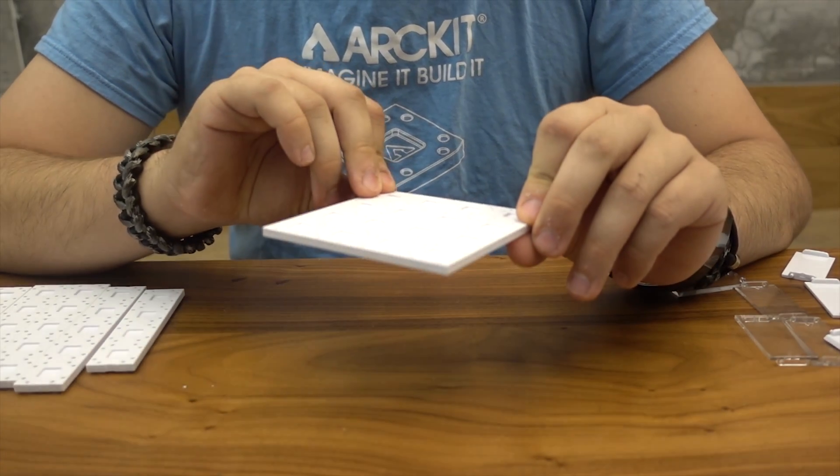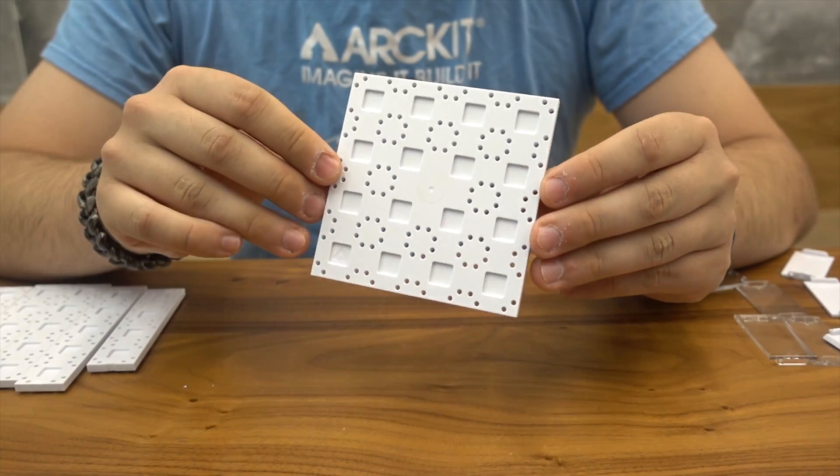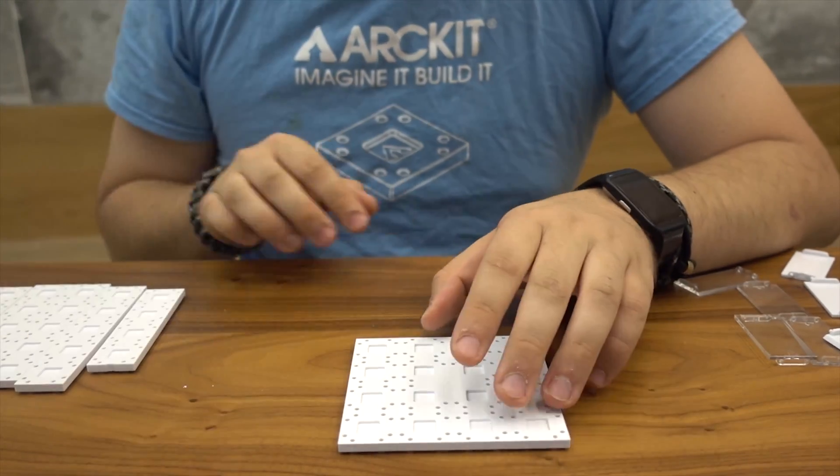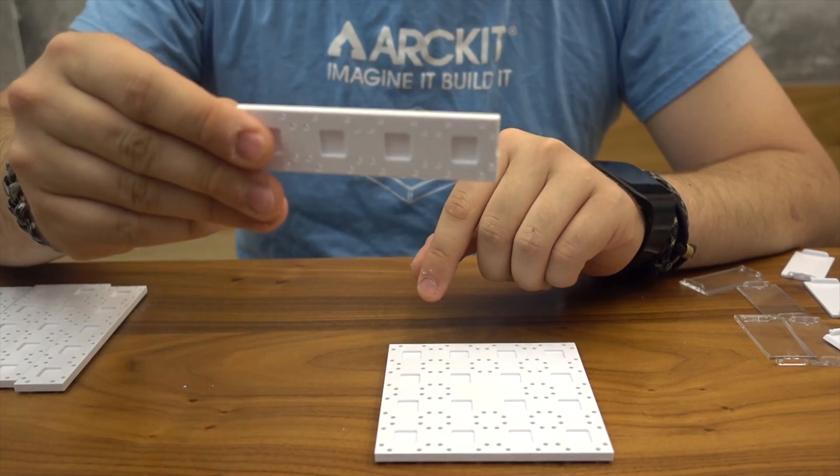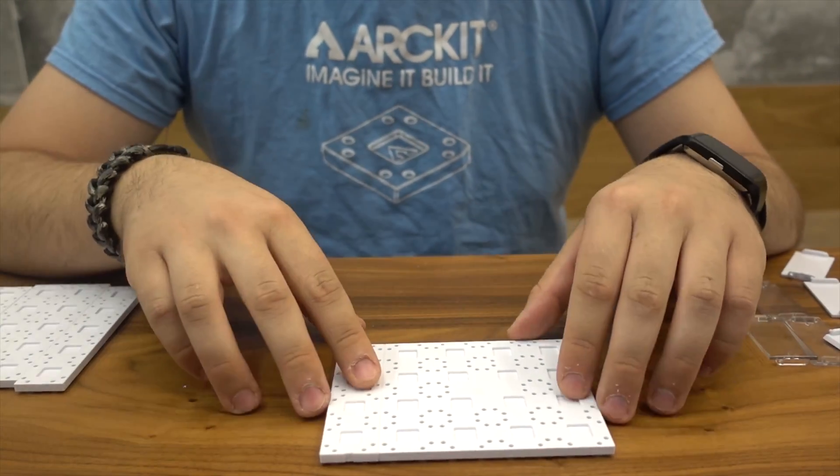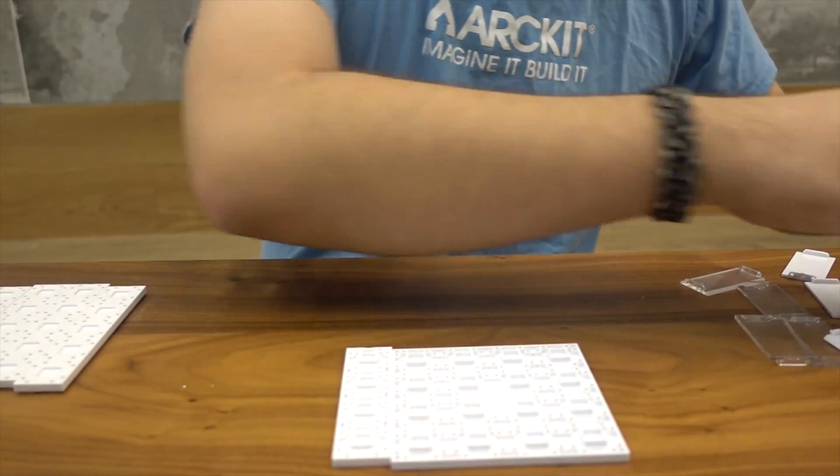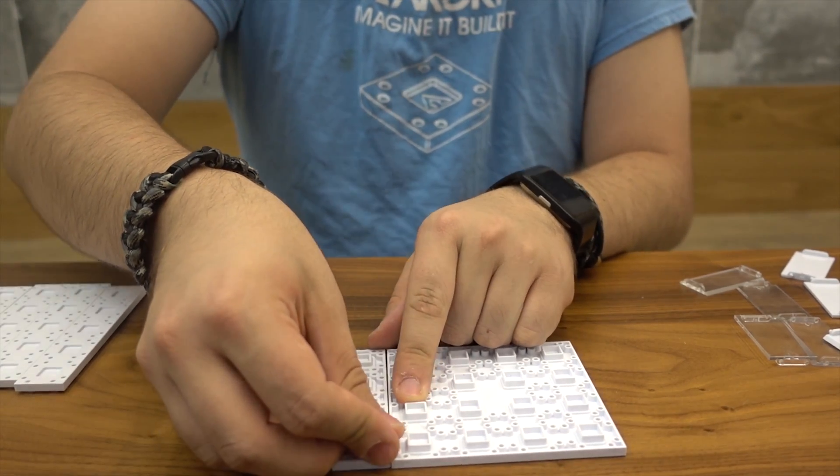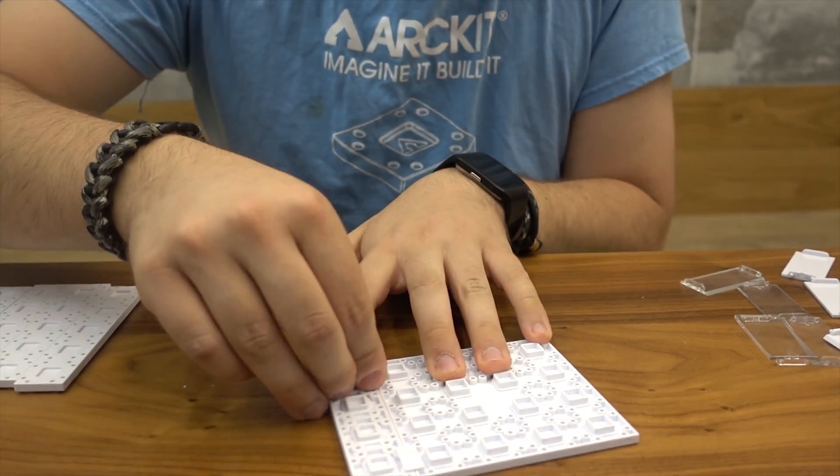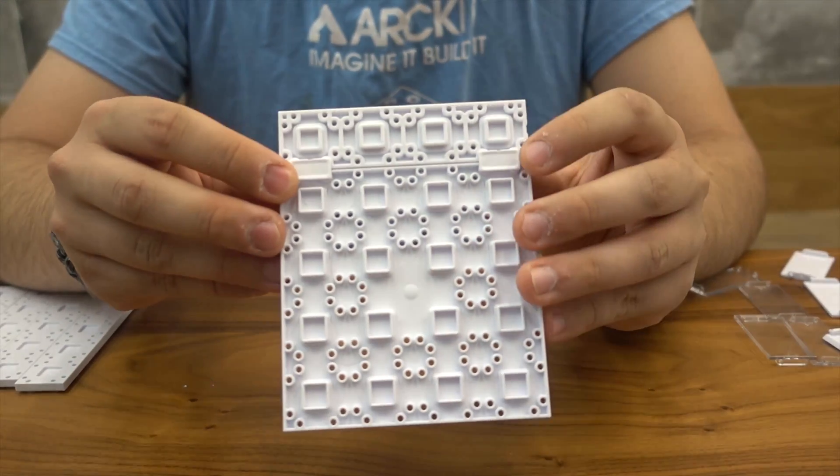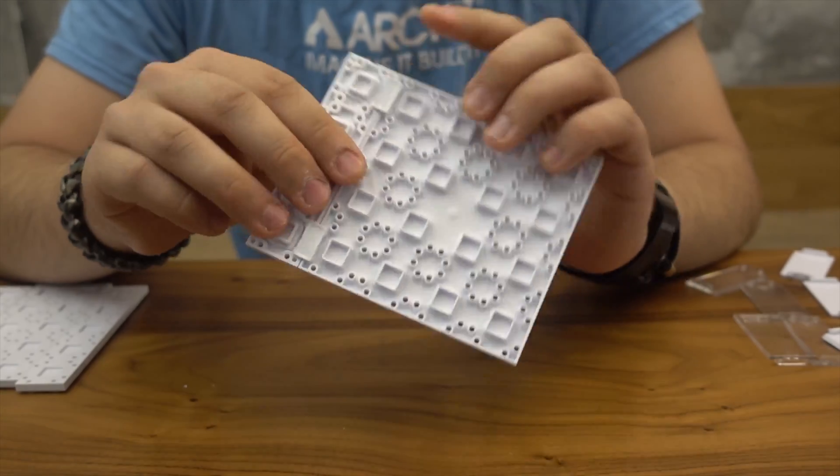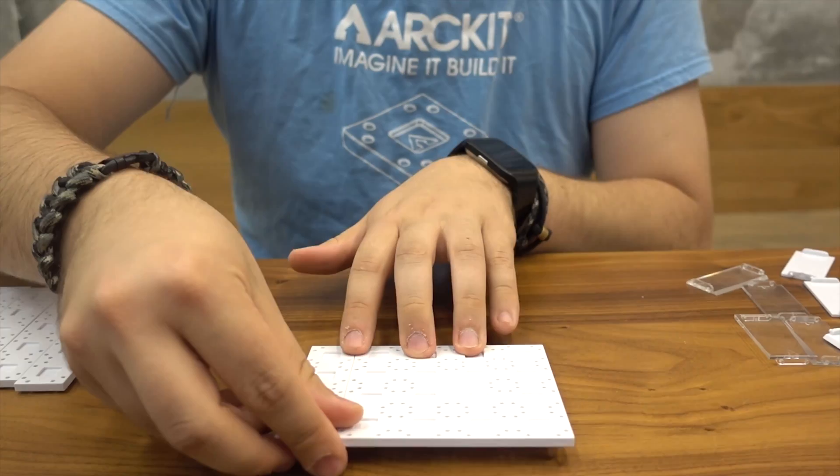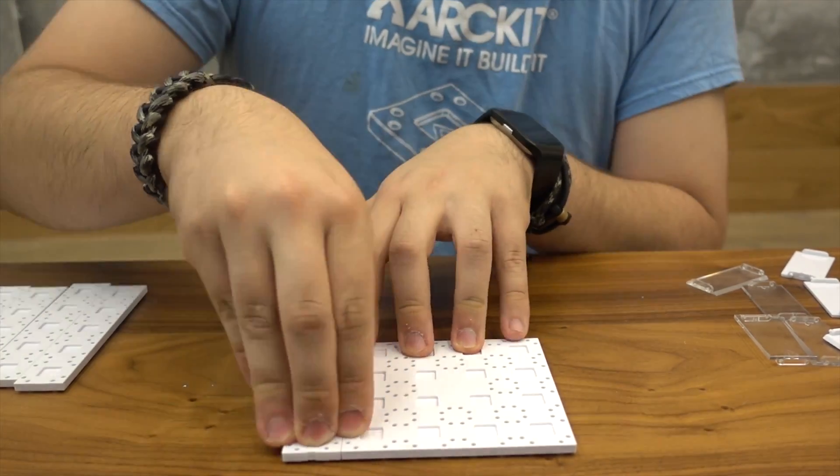We're going to start off with a base using the ArcKit 4x4 plate. We're going to extend that base by one unit, so let's take the 4 piece and add it right next to it. Flip this over. I like to use the connector pieces to connect those two plates together. That's a rule of thumb - I like to place one connector on either end. More connectors will make it stronger, but you don't really need that for this model.